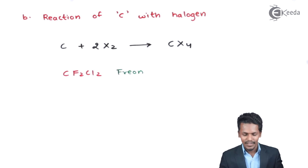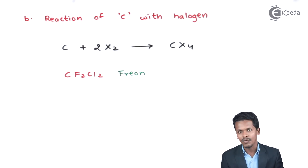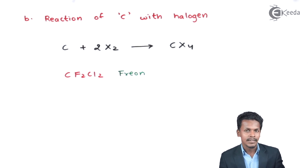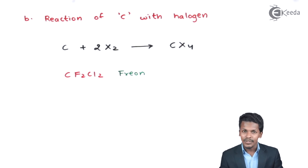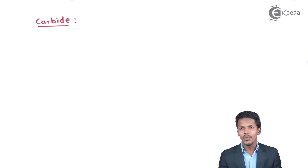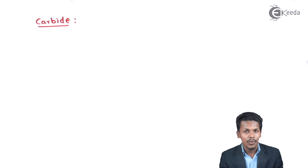Carbon has wide applications in industries. The oxides formed, as mentioned earlier, are used in the extraction of pure metals and also in removing impurities. Carbon can also react to form carbides, so let us now talk about carbides.